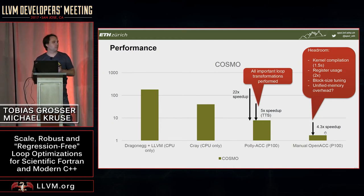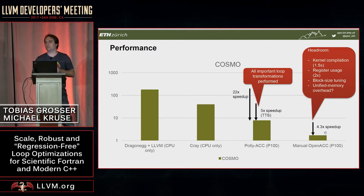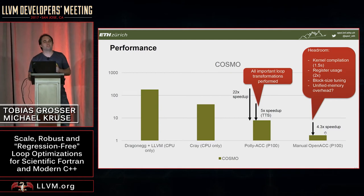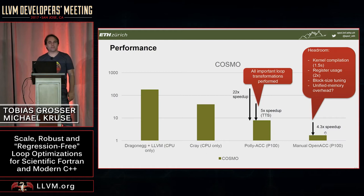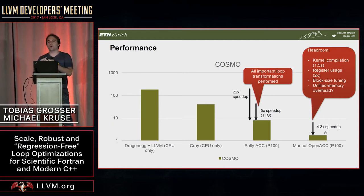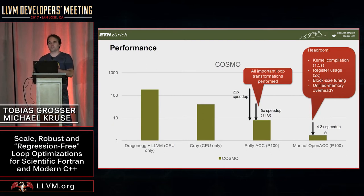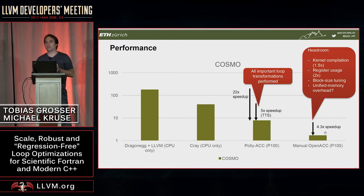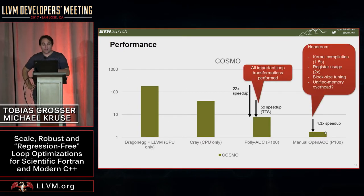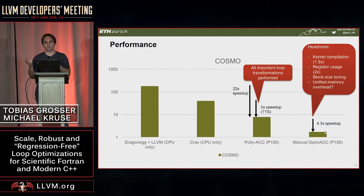We have a good idea about some of what's missing; other things we really don't know yet. One issue is register usage — LLVM uses too many registers, which prevents us from getting enough parallelism. But the interesting thing is two-fold: we're really scaling up to non-trivial programs, and at least according to the loop transformations we can do everything right — we do fully automatically all the stuff that MeteoSwiss was hiring engineers to do manually. The LLVM performance and our performance are not yet optimal, and some overhead may come through unified memory.